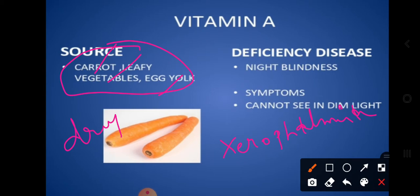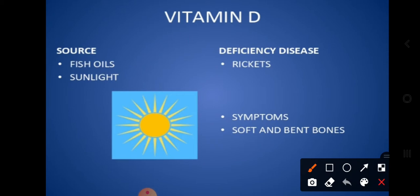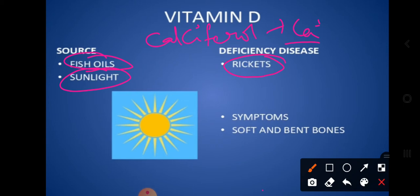The second fat-soluble vitamin is Vitamin D. Vitamin D is scientifically called calciferol, because it is very important for calcium ions to be fixed in the body. It is available in fish oils and early rays of sunlight. Vitamin D helps strengthen bones and teeth, as these are the two areas where calcium ions are very important, and it aids in the formation of bones.